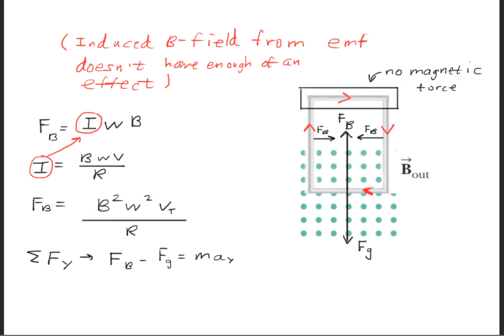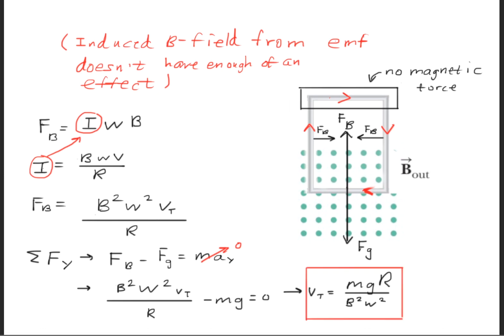Next, we'll sum all the forces acting in the y direction using Newton's second law. We cancel the mass times acceleration term because there is no acceleration in the y direction — at terminal velocity, the magnetic force and the force of gravity equal one another. We plug in what these forces are equal to, set them equal to each other, and solve for the terminal velocity.